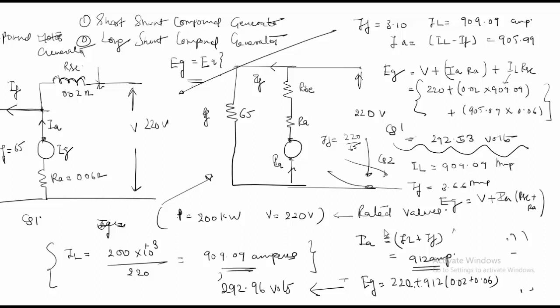So my EG for this was equal to 292.53 and my EG for this was equal to 292.96 volts. So this is how I calculate this.